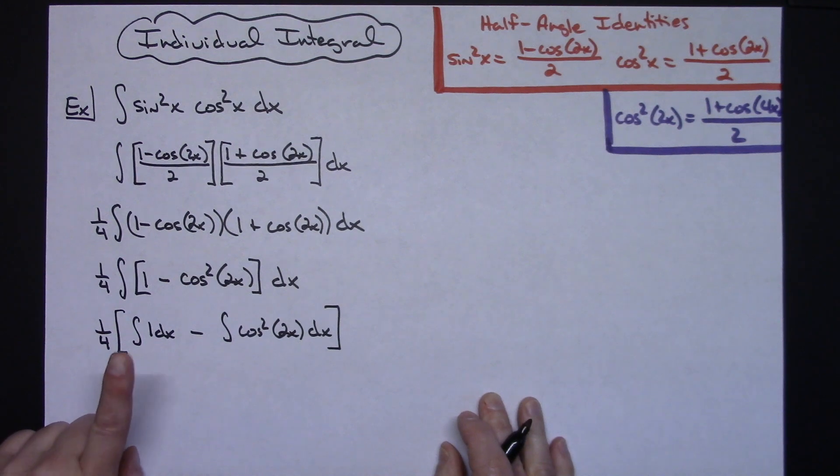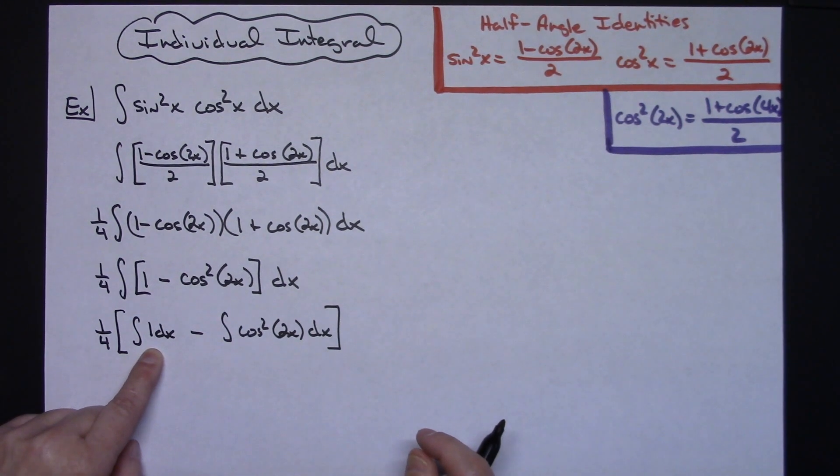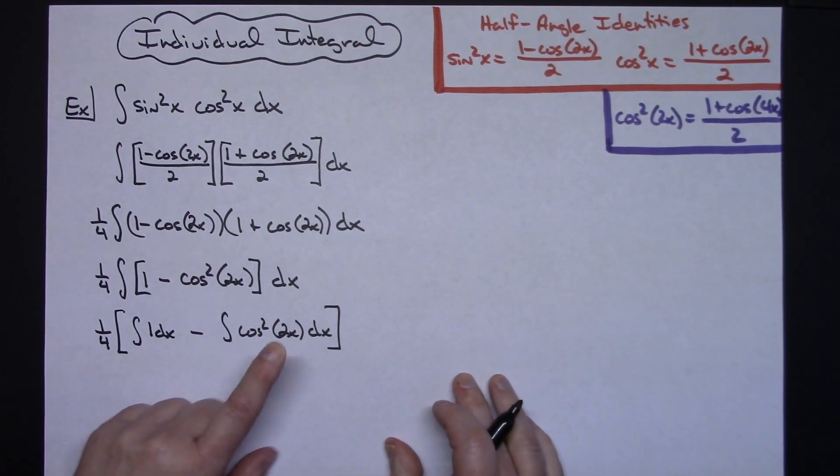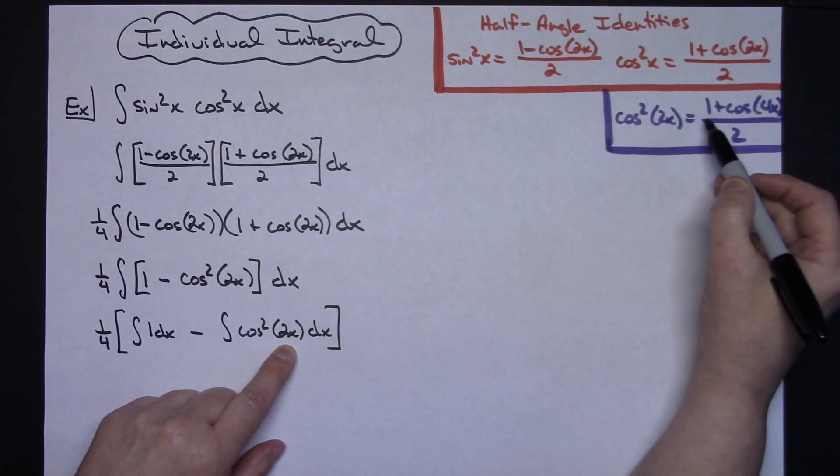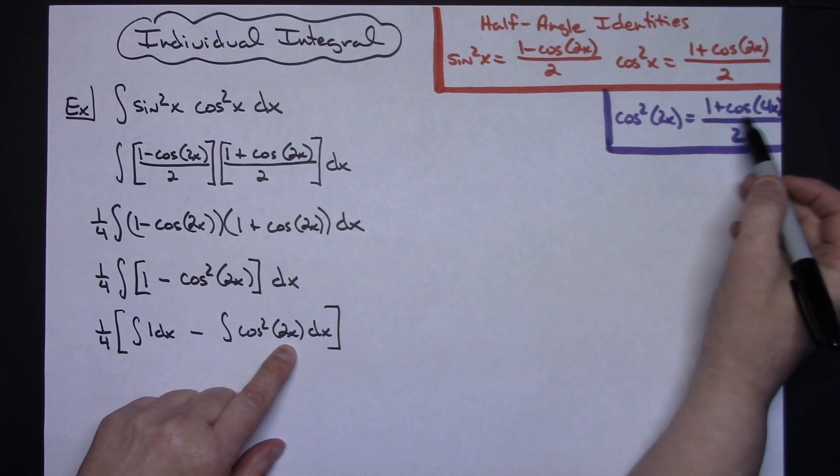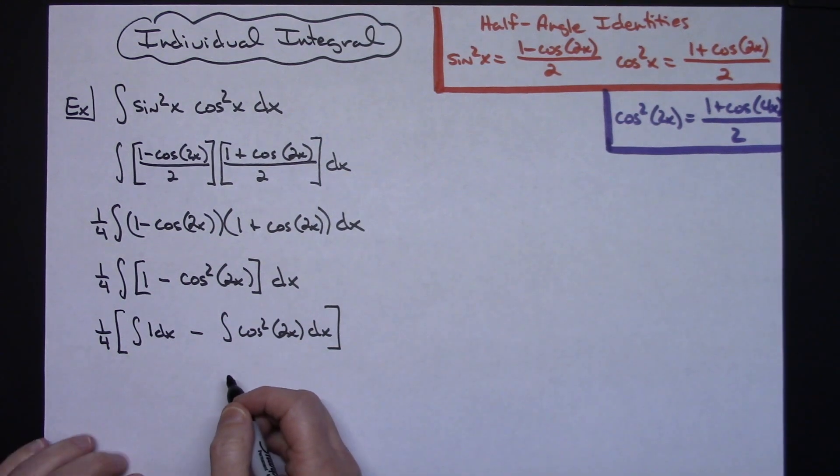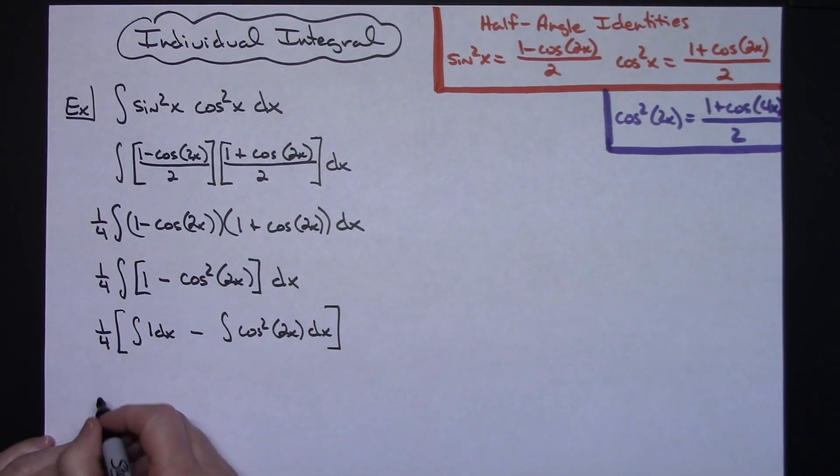Now at this point, the integral of 1 with the dx is just going to give us an x. That's going to be an easy one. Here I have another half angle identity, except this time it's a 2x. So because I have the cosine squared of 2x, that identity is going to be 1 plus cosine 4x all over 2. So we'll do that substitution.